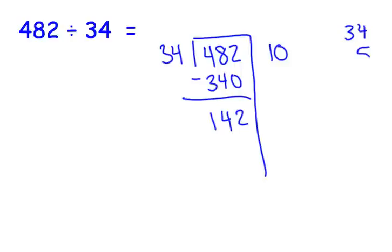Let's go with 5 groups, maybe. Let's check over to the side and see if 5 groups would work. 34 times 5. 5 times 4 is 20. 5 times 3 is 15, 16, 17. That is too much. 170 is more than 142. So, let's try 34 times 4 groups. 4 times 4 is 16. 4 times 3 is 12, plus 1 is 13. 136 will work.